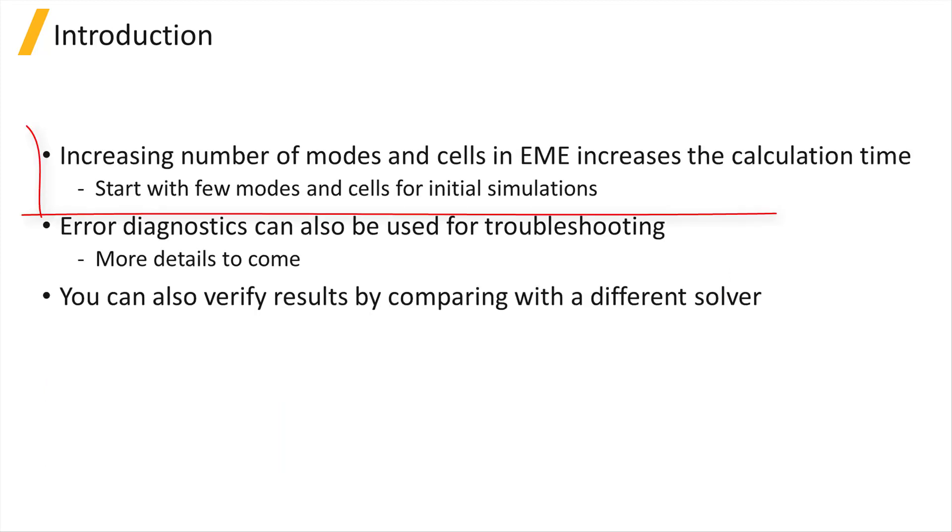Since increasing the number of modes in cells increases the time that it takes to run the simulation, the recommended simulation method is to first set up the simulation using low accuracy settings with a small number of modes and few cells in each cell group region. This will allow you to run initial simulations quickly and get some rough results to make sure that there are no major problems with the setup.